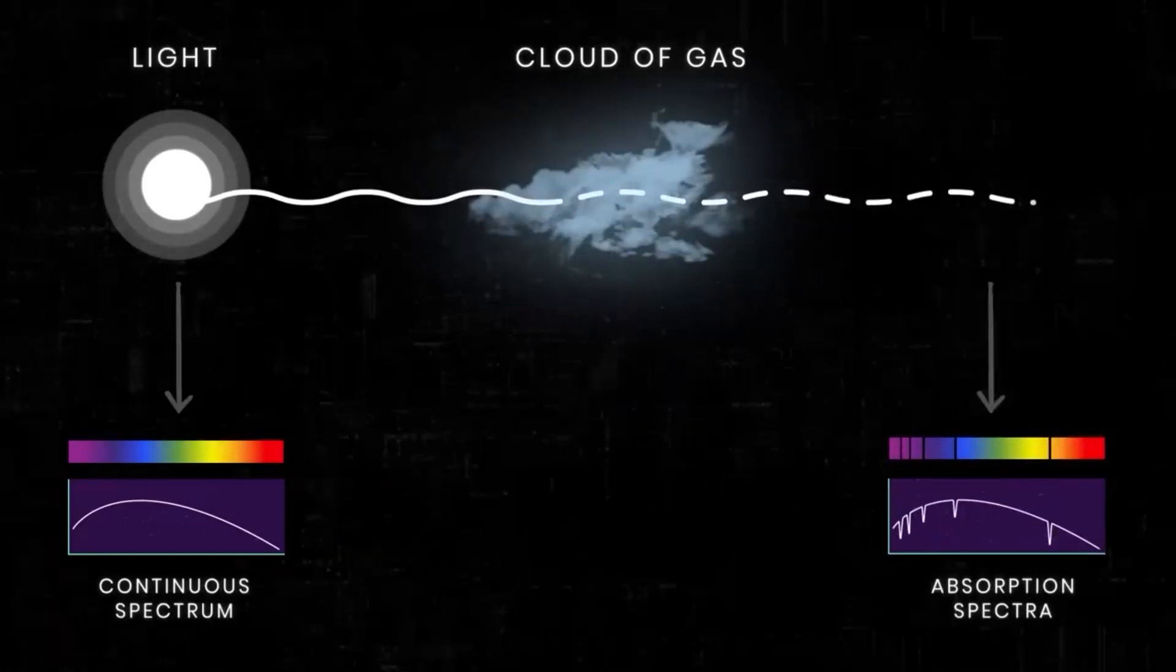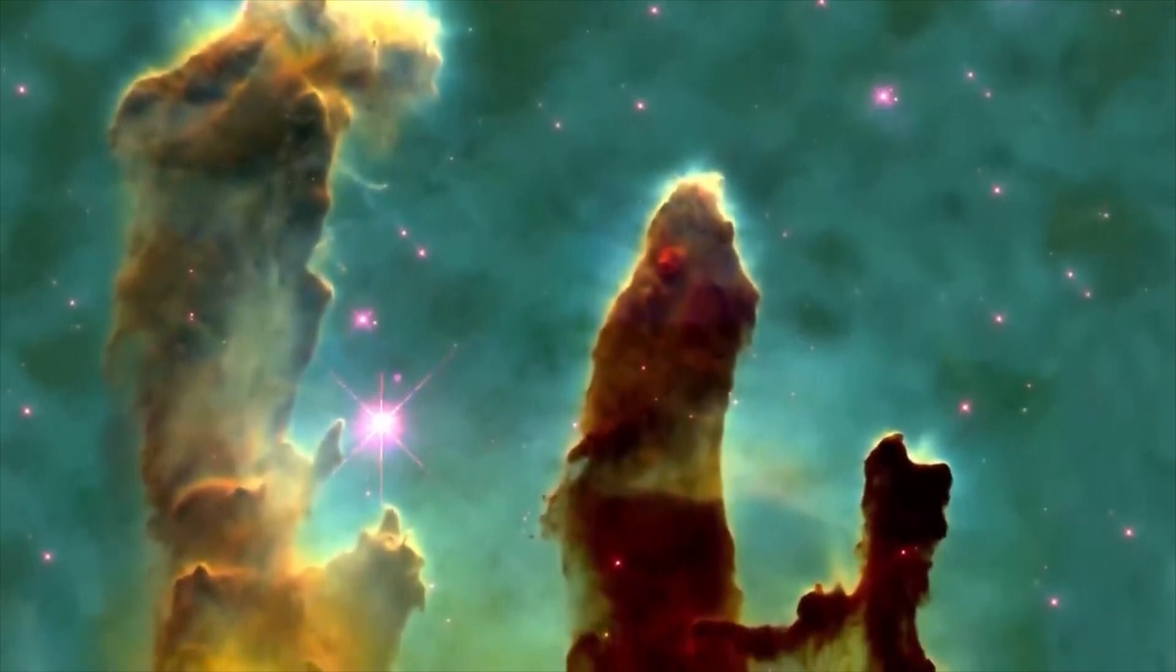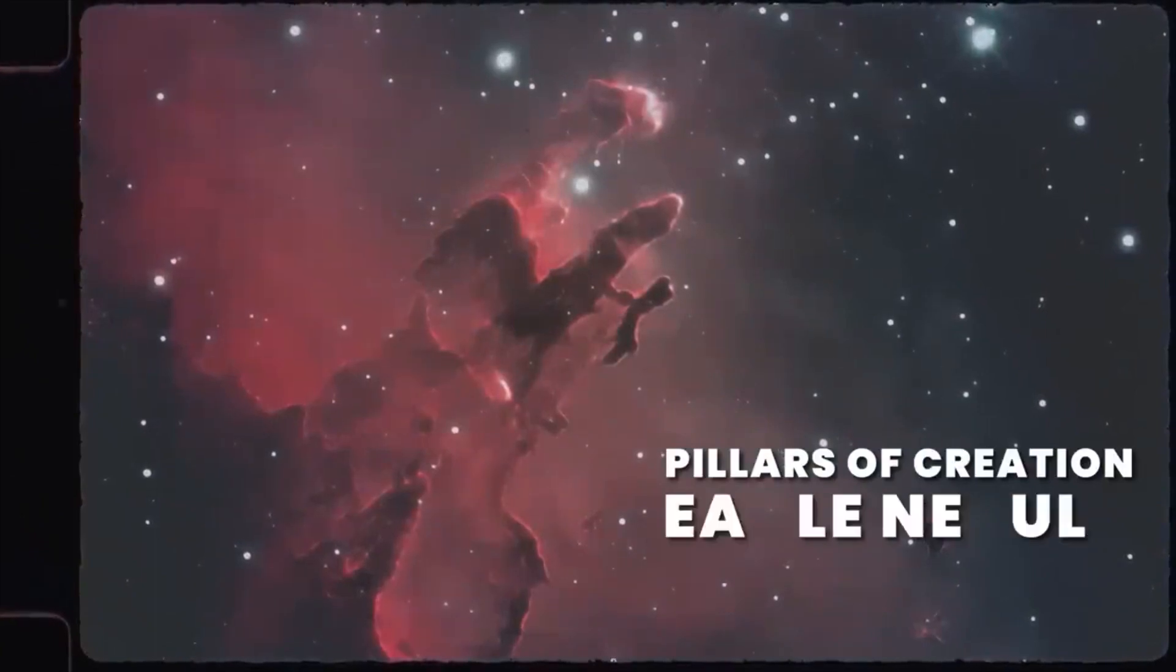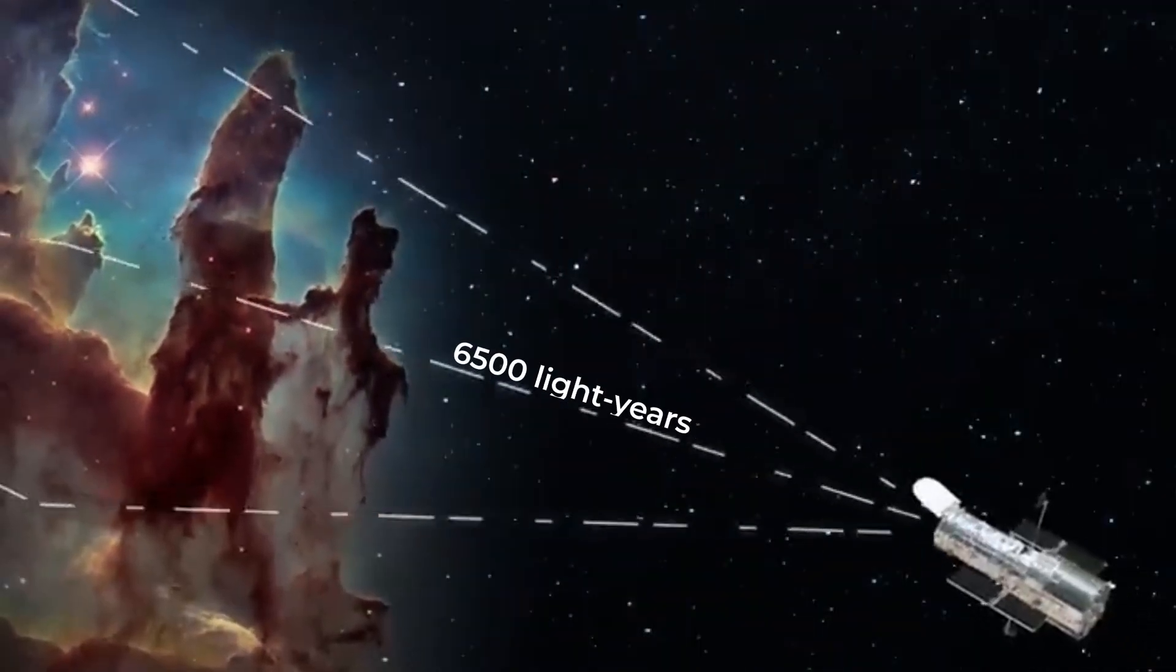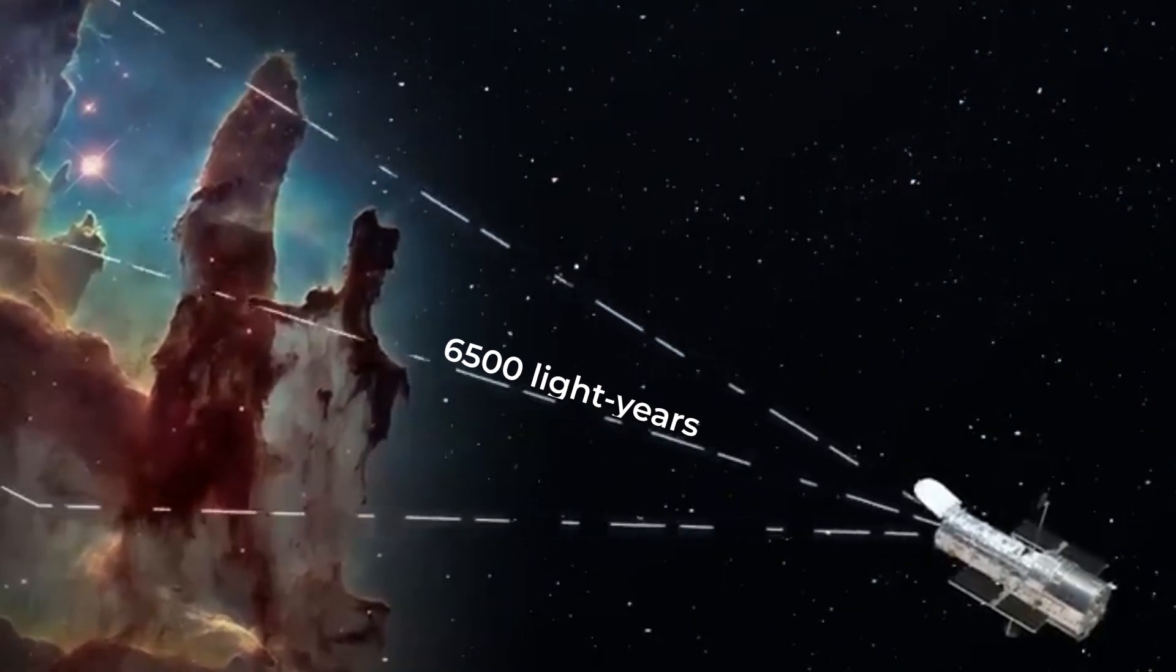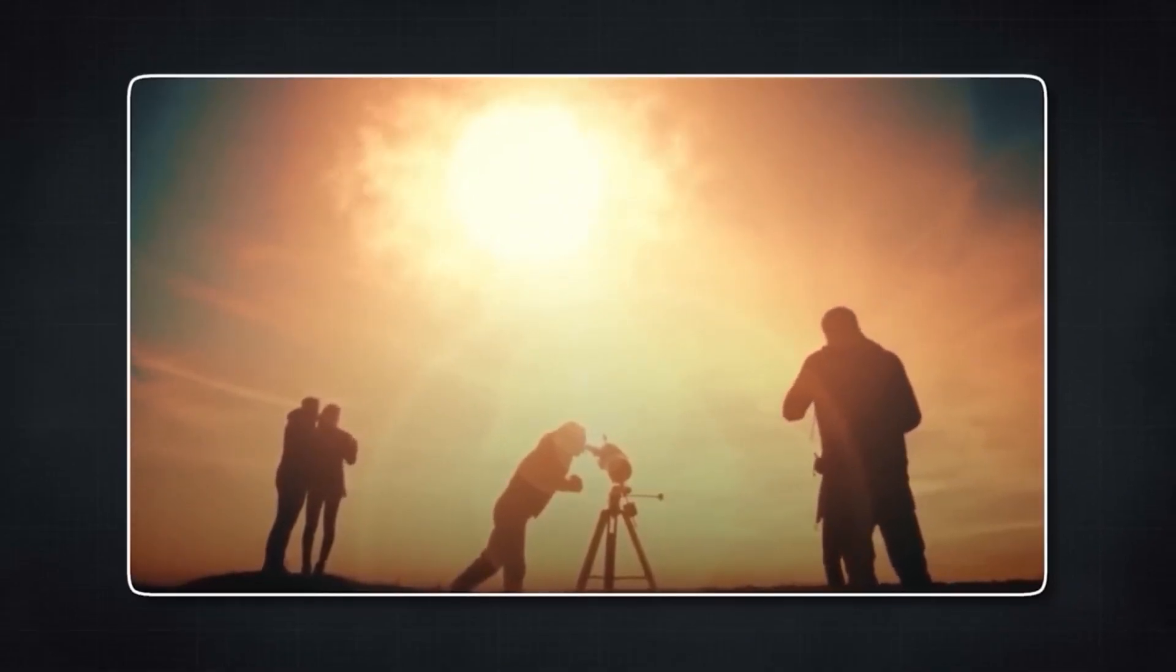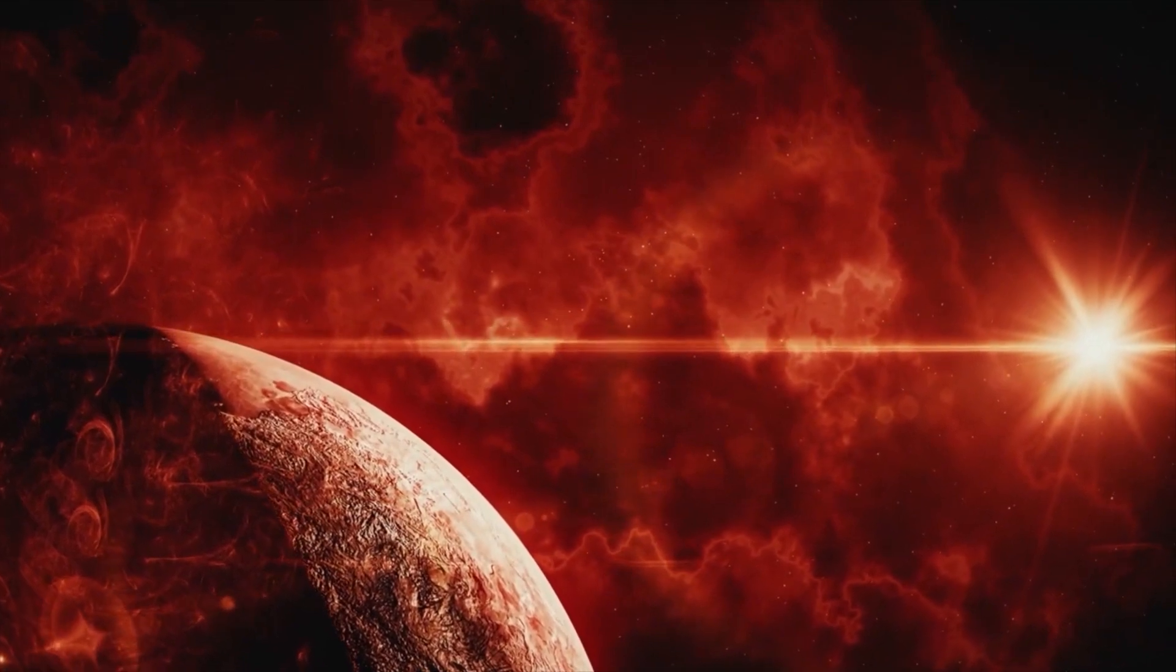This is exactly how the iconic Pillars of Creation image was taken by Hubble. The Pillars of Creation image showcases the Eagle Nebula that was taken 6,500 light-years away from Earth. We get to see multicolored columns of gas and dust clouds illuminated by the intense ultraviolet light being emitted by young stars, providing a visual treat.